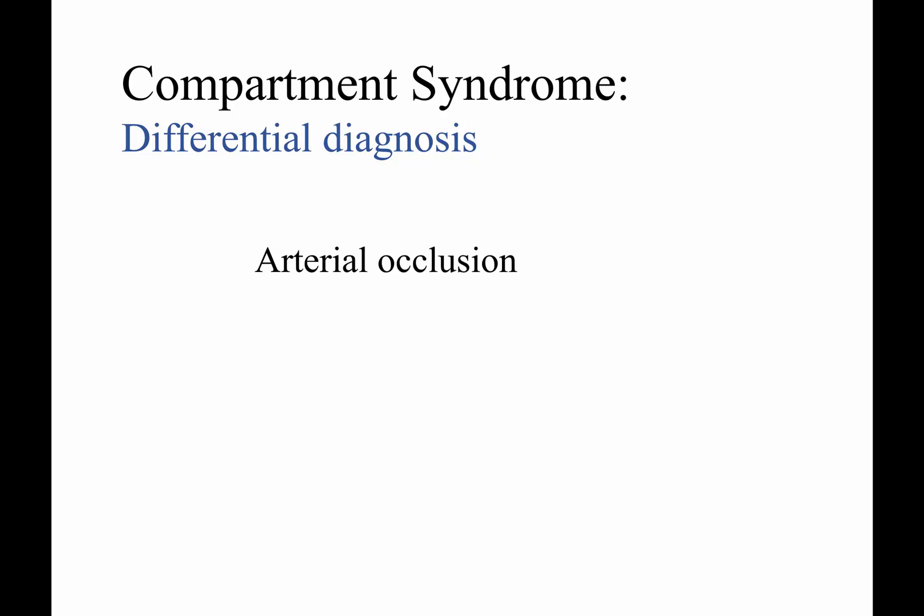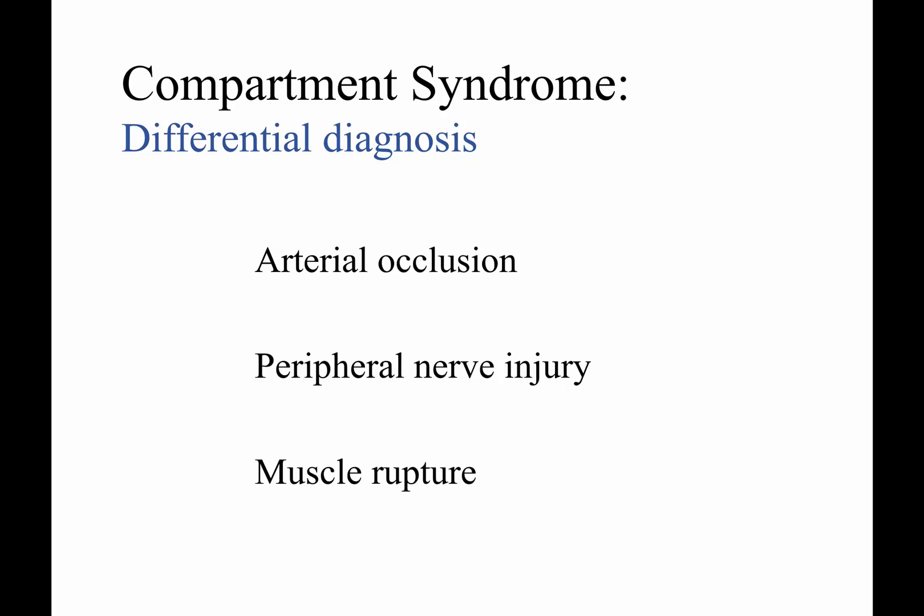Differential diagnosis includes arterial occlusion — not mutually exclusive from compartment syndrome, as it can lead to it, but can also present similarly in early stages. A peripheral nerve injury can lead to numbness, some paralysis, and neuropathic pain, but that's not a compartment syndrome. A muscle rupture can lead to paralysis and pain with passive stretch. These are not mutually exclusive — bleeding from a muscle rupture can lead to compartment syndrome in the involved compartment.